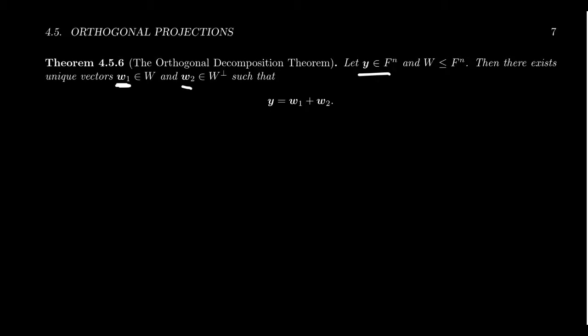First of all, w1 will live inside the subspace W. Be aware, y itself might not have anything to do with W, but w1 will live inside of W. w2 will be inside the orthogonal complement of W, and the sum of w1 plus w2 will equal y. In fact, there's only one way to do this, and so this is the orthogonal decomposition. We can break apart y into two pieces: a W part and a W perp part.